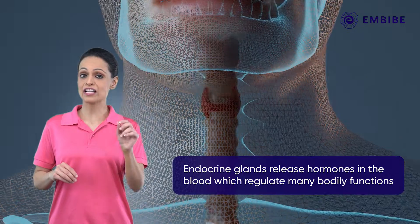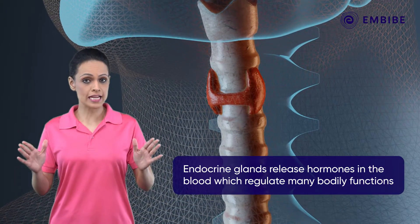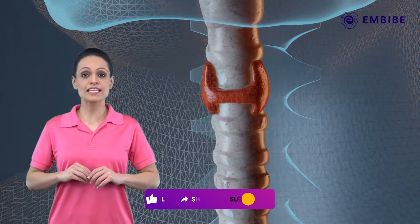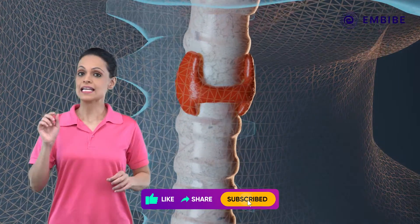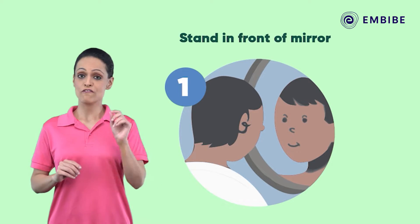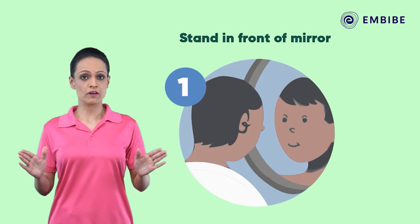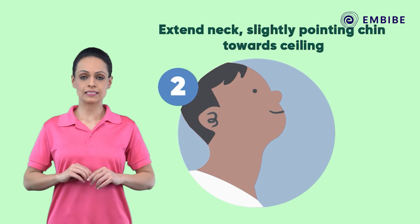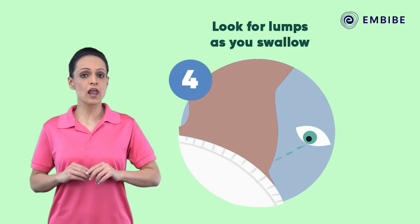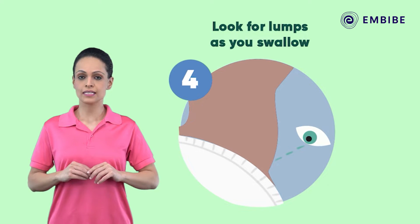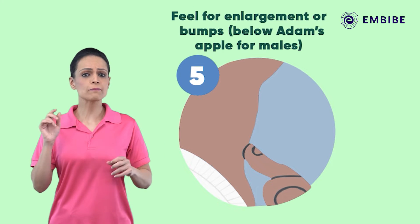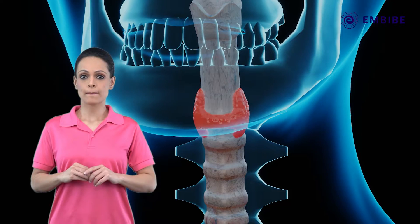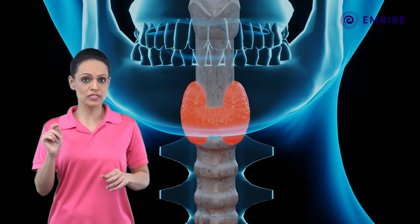It's not possible to touch many of your endocrine glands, and for a good reason. Though there is an endocrine gland in your throat that you can test for irregularities on your own. All you need is a glass of water and a mirror. First, stand in front of the mirror and tilt your head back slightly. Take a sip of water and look for lumps as you swallow, then feel for any bumps. If you find something that didn't feel right, talk to your doctor.